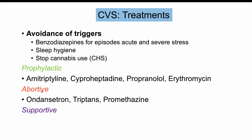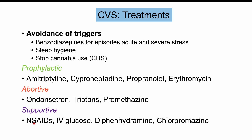If prophylactic and abortive therapies are insufficient, supportive therapies can reduce symptoms. These include NSAIDs like ibuprofen, IV glucose to reduce episode severity, diphenhydramine (Benadryl), and chlorpromazine. Diphenhydramine and chlorpromazine can help the patient fall asleep, which can stop the episode. For further reading, check out lessons on cannabinoid hyperemesis syndrome, trigeminal neuralgia, and migraine headaches.